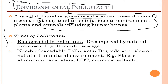There are two basic types of pollutants: biodegradable and non-biodegradable pollutants. Biodegradable pollutants are substances that are decomposed by natural processes, such as domestic sewage. Non-biodegradable pollutants are substances which decay very slowly or do not decay at all in the natural environment, such as plastic.